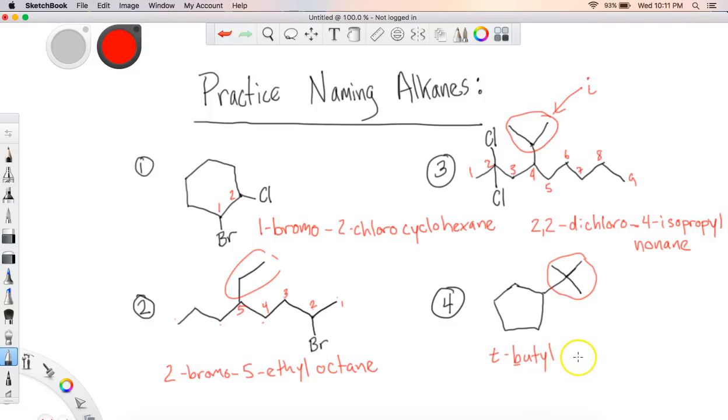And if you're confused by that, go back and check out the lecture that we had earlier on naming alkanes. So this is going to be t-butyl, and then the main cyclic compound here is a cyclopentane. So it would be t-butyl cyclopentane. And there you go, those would be the answers that you should have for naming these compounds.